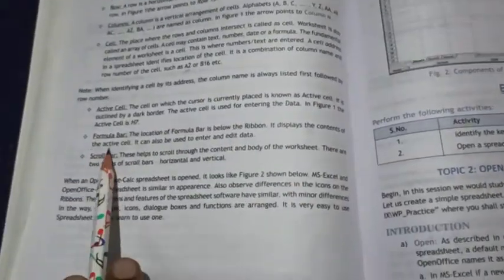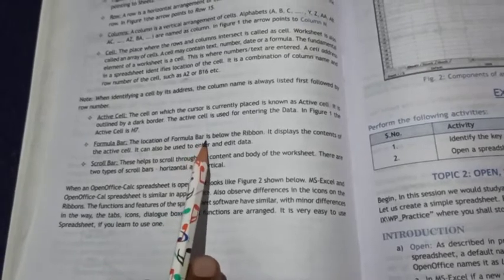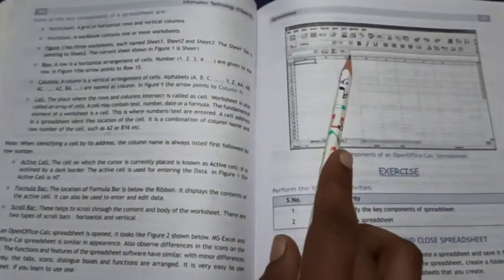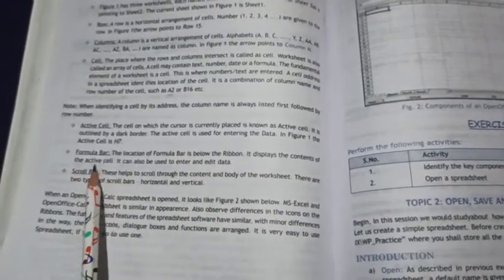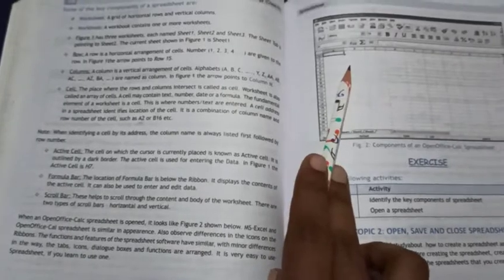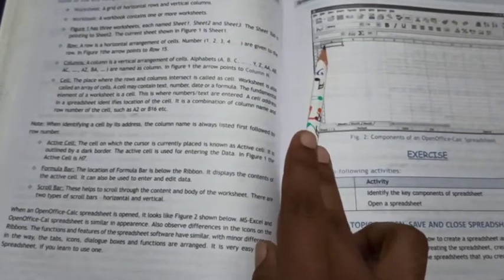Formula Bar: The formula bar is below the ribbon. It displays the content of the active cell. Whatever content is written in the active cell will be displayed in the formula bar.